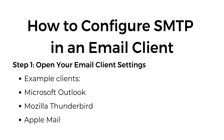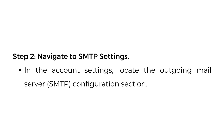How to configure SMTP in an email client. Step one: open your email client settings. Example clients: Microsoft Outlook, Mozilla Thunderbird, Apple Mail. Step two: navigate to SMTP settings. In the account settings, locate the outgoing mail server SMTP configuration section.